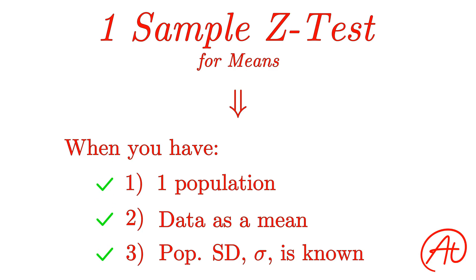If these three things are true, then you would use the one sample z-test I'll go over in this video. If however, only the first two things are true, but the population standard deviation is not known, then you would use a one sample t-test, but I'll cover that in the next video.